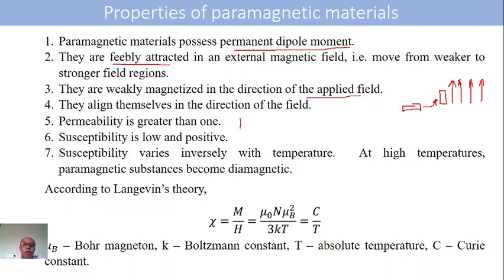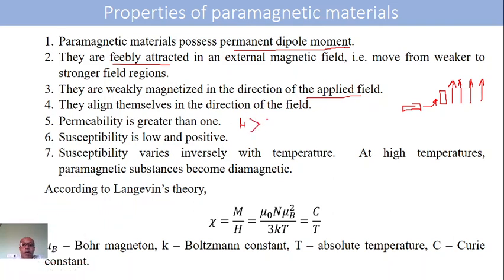Permeability is greater than one for paramagnetic materials. Susceptibility is low but positive in case of paramagnetic, whereas in case of diamagnetic it is negative. Susceptibility is temperature dependent in paramagnetic materials — it was independent in diamagnetic materials.